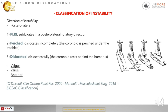O'Driscoll, in the early 2000s, described three levels of dislocation. We start from PLRI, or posterolateral rotatory instability, or subluxation in a posterolateral rotatory direction. Number two is a perched dislocation, where the coronoid is perched under the trochlea. Number three is the completed dislocation of the coronoid behind the humerus.